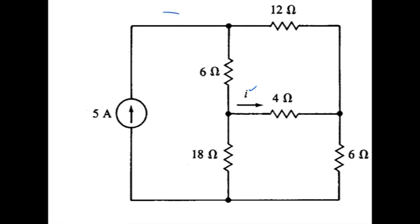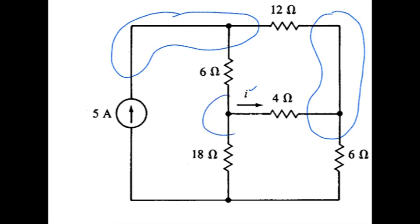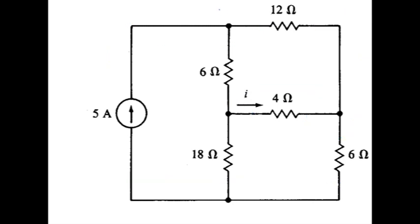So always begin by counting the number of nodes. I see 1, 2, 3, and 4 nodes. Next step, go ahead and label those nodes with their node voltages. Also need to select one of those as a reference node. So I'll call the top one V1, middle one V2, off to the right V3, leaving the reference node at the bottom.